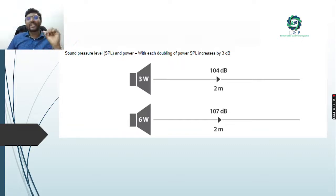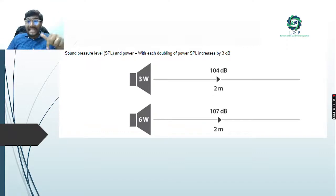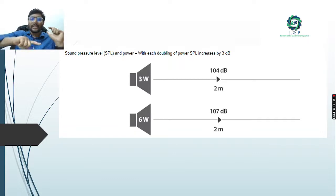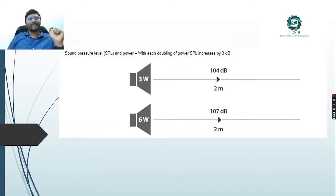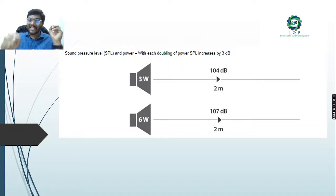Now relating SPL to power: a 3-watt speaker producing 104 dB at 2 meters - if we double the power, the SPL increases by 3 dB. So at 3 watts it produces 104 dB, and when we double the power to 6 watts, it produces 107 dB at 2 meters. This is an important calculation when designing speaker placement inside a building.